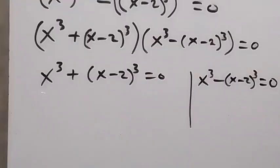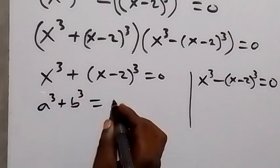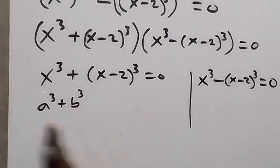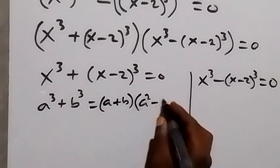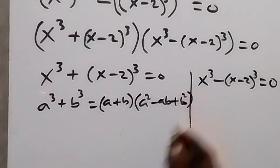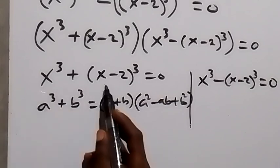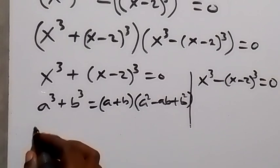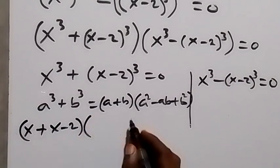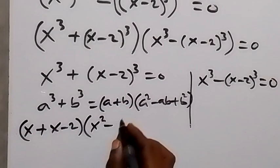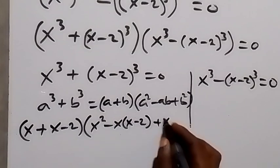From the first case, this follows a³ plus b³ equals 0. We can express a³ plus b³ as a plus b multiplied by a squared minus ab plus b squared — that is the sum of two cubes identity. When we apply that here, a serves as x and b serves as x minus 2. So this becomes x plus x minus 2 multiplied by x squared minus x times x minus 2 plus x minus 2 squared, equals to 0.